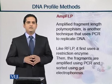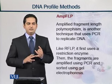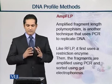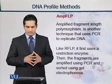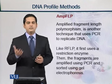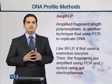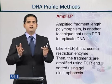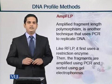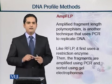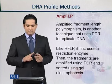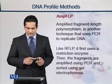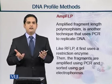So another approach — as we have done RFLP, we have done PCR — the third approach is AMPFLP. AMPFLP stands for Amplified Fragment Length Polymorphism. It is a similar approach to RFLP, but the difference is, instead of using fragment analyzers, we use PCR to obtain a high size of our DNA sequence. Like RFLP, it first uses the restriction enzyme, then these fragments are amplified — meaning a huge number of segments are made — using PCR and sorted gel electrophoresis.